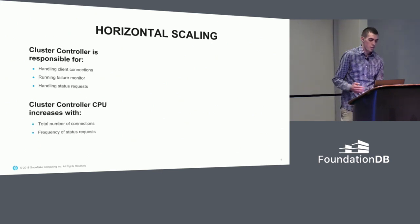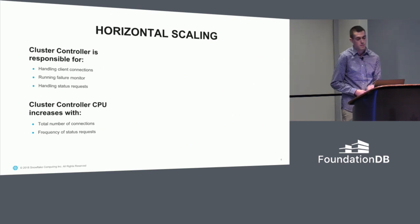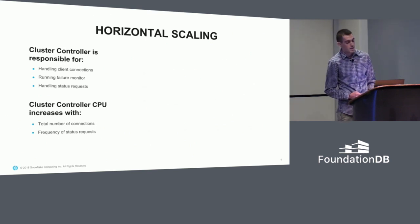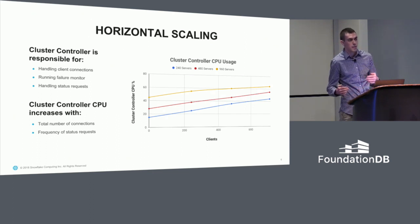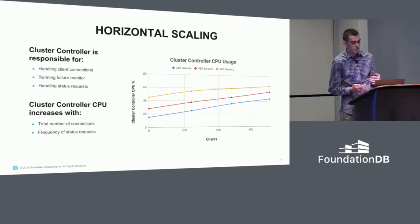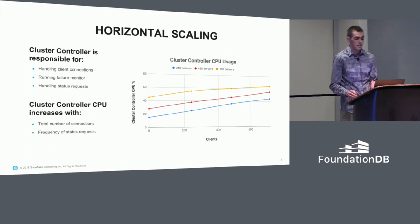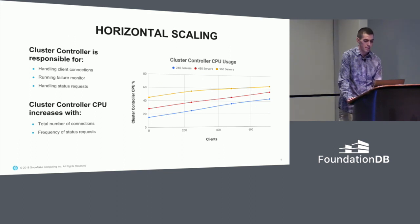Cluster controller CPU will increase with the total number of connections and the frequency of status requests. As you can see, even in the absence of any workload, as you scale out the number of clients and the number of cluster servers used, you see a steady increase in CPU — and this can be a problem because the cluster controller is single-threaded.